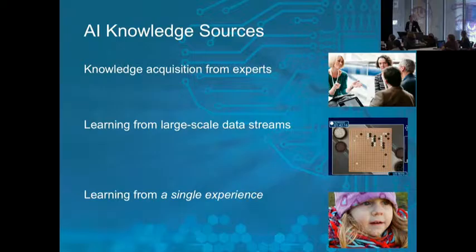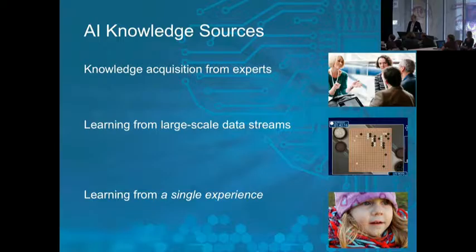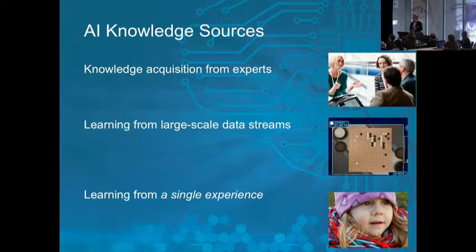A key problem in artificial intelligence is how AI systems can acquire the knowledge they need to perform at a high level. The classic approach has been conventional knowledge acquisition, working with experts to characterize knowledge that can result in very powerful knowledge, but can also be extremely expensive. Another approach is having systems that explore an environment, using a lot of data to figure out patterns from that.